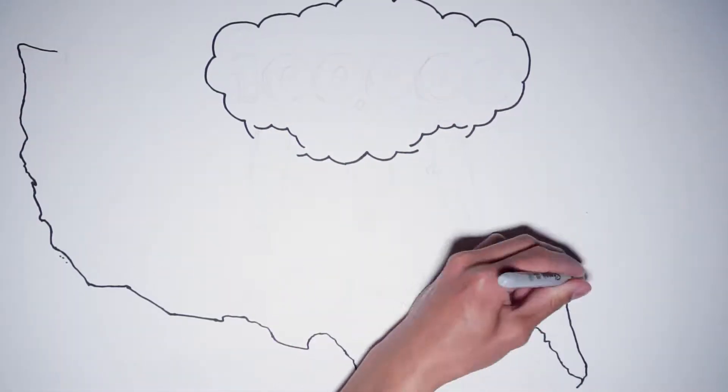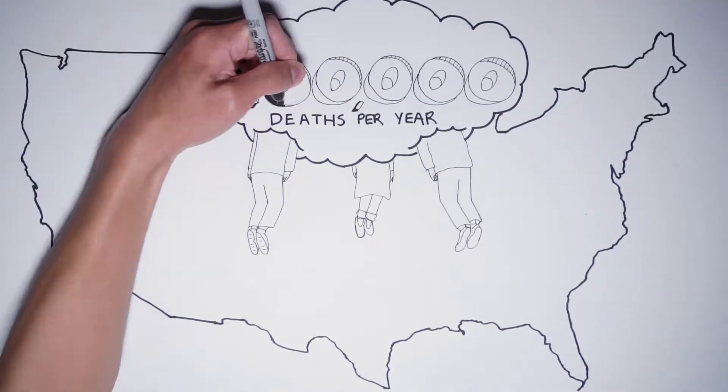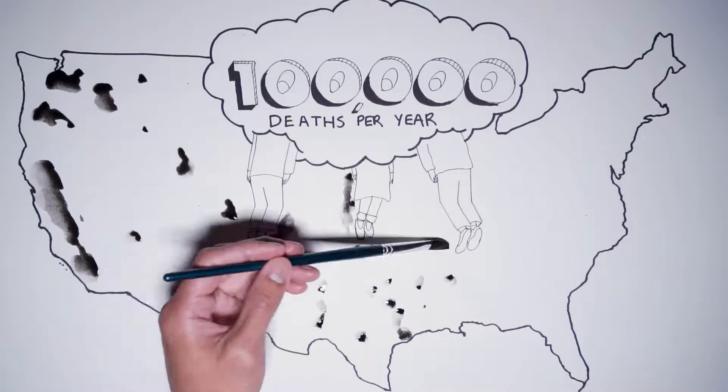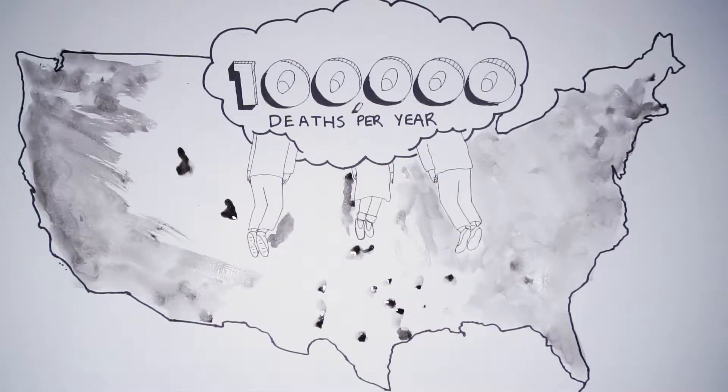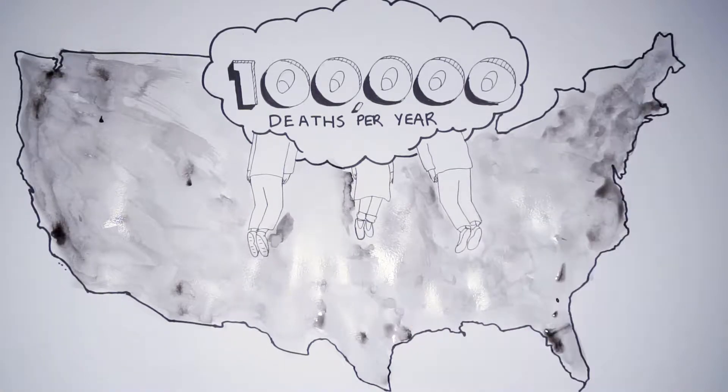Outdoor air pollution is the main environmental health risk in the United States, leading to over 100,000 deaths each year. To address this problem, it is important to know not only where pollution comes from, but also how much each source of pollution contributes to deaths in the US.